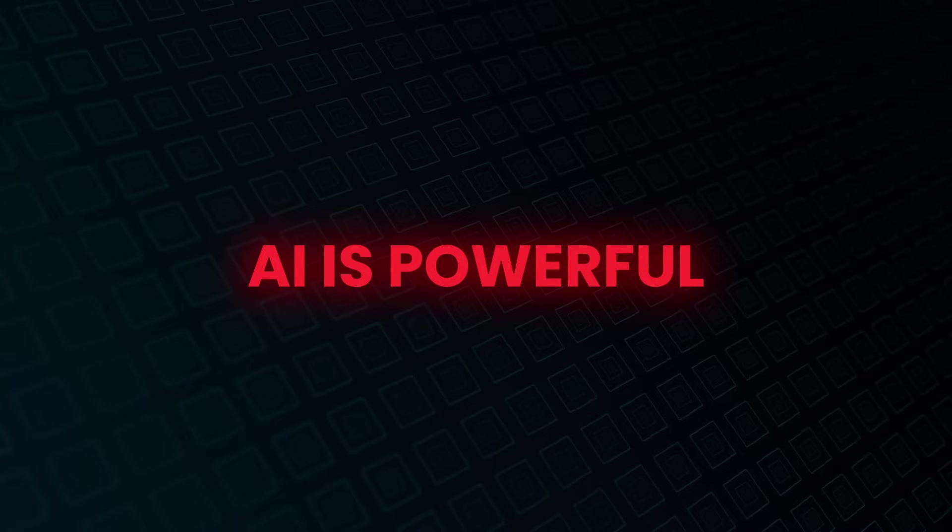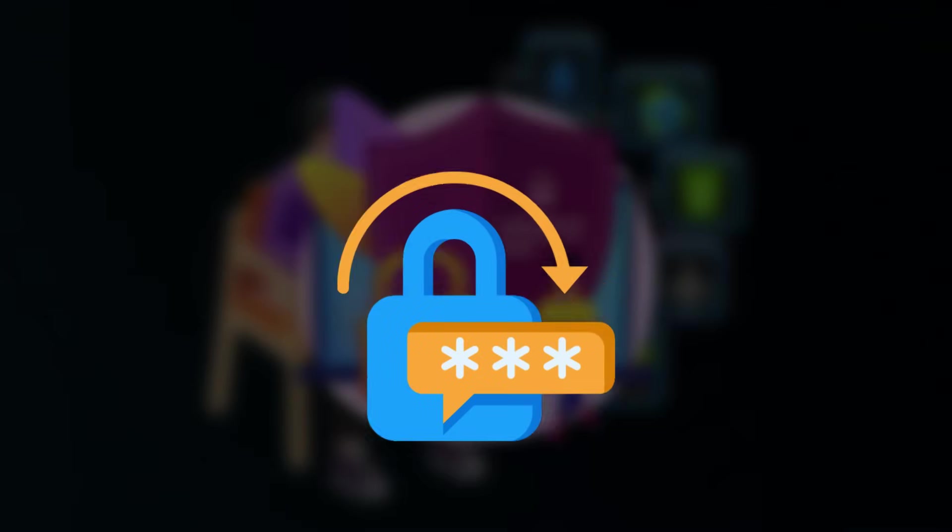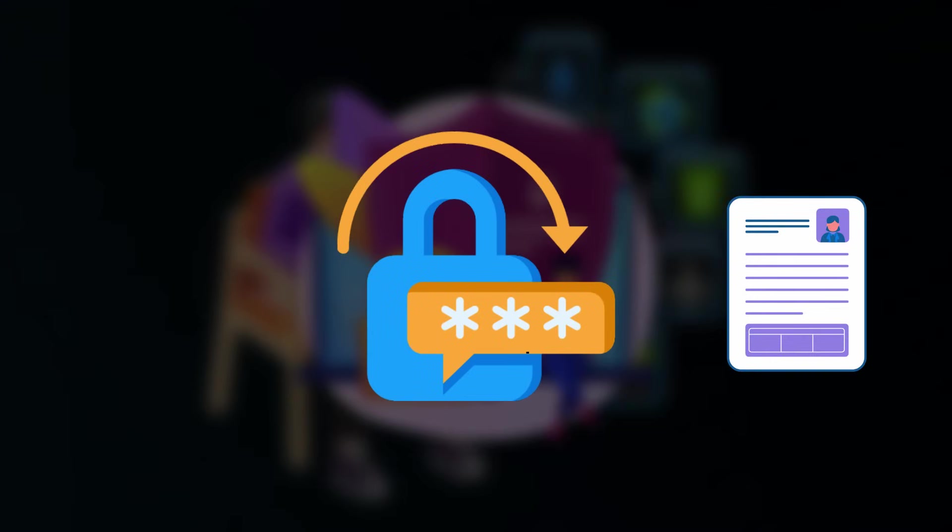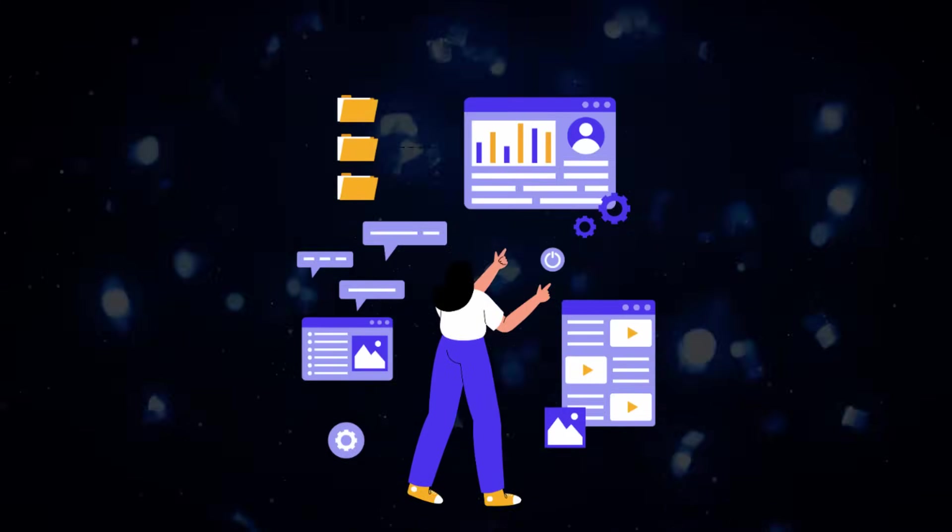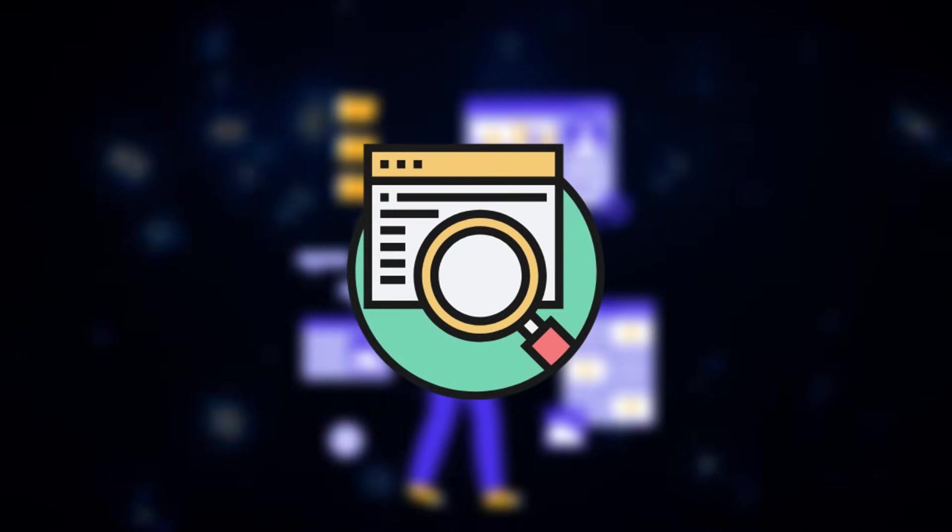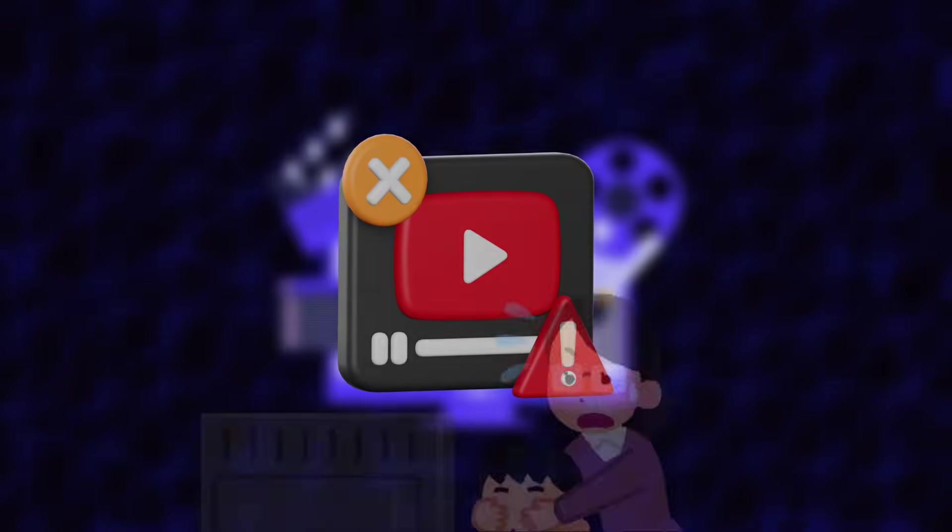AI is powerful, but it must be used responsibly. Data privacy: avoid sharing passwords, personal info, or sensitive data. Verification: check information from AI against reliable sources. AI can be wrong. Responsible use: avoid creating fake videos or harmful content.